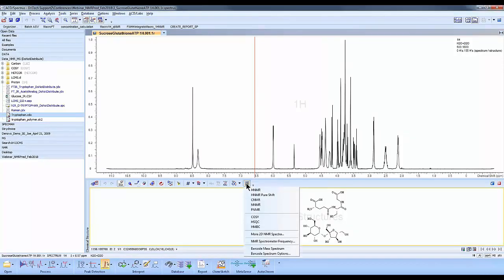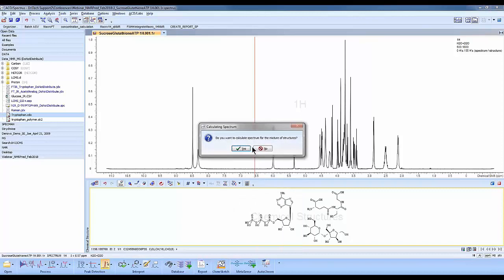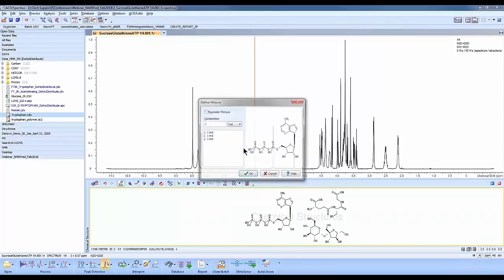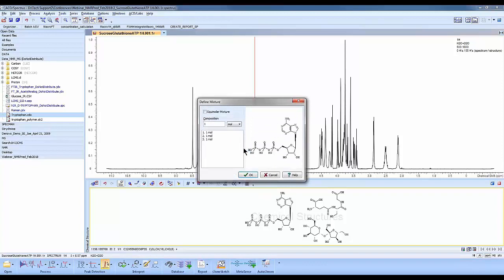So we're going to go to the calculate button here. We'll go to HNMR. It's going to ask us, do you want to do a prediction for a mixture? We'll say yes. And here we have the option of defining the mixture.